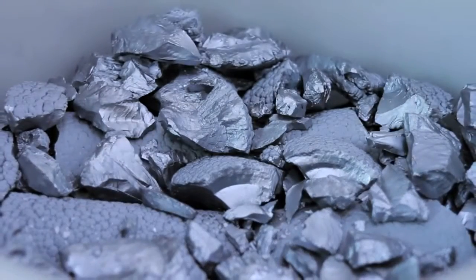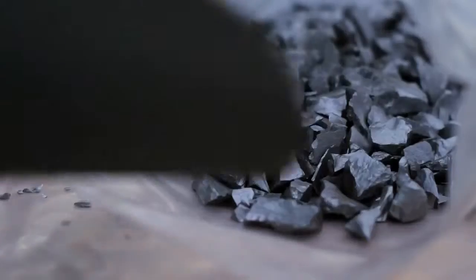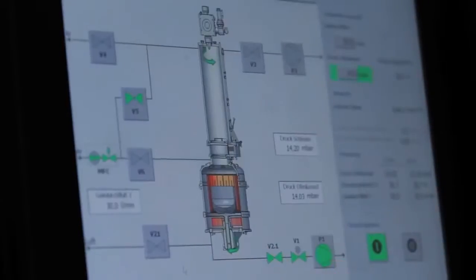As a first step, raw silicon is extracted from quartz sand. For use in the photovoltaics industry, the semi-metal must be 99.99% pure.